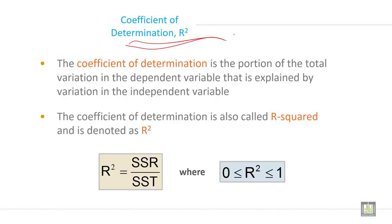The coefficient of determination is the portion of the total variation in the dependent variable that is explained by variation in the independent variable. The coefficient of determination is also called R-squared and is denoted as R².